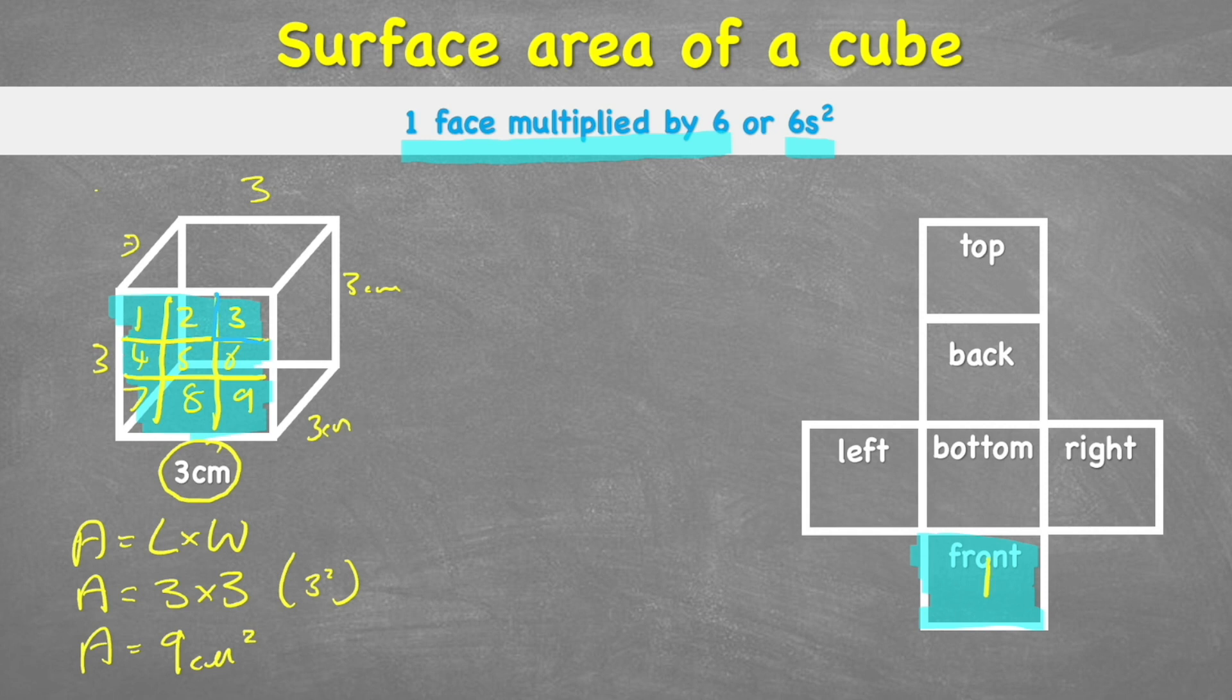We have nine centimeters squared on the front face, but we can see the front face is only one of six. So now what we can do to find the total surface area is we can take this nine and multiply it by six. Nine times six is 54, so therefore our total surface area is 54 centimeters squared.